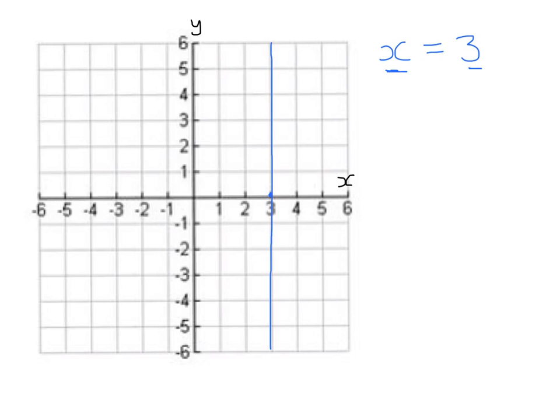We could do another one, say x equals minus 5. And the same, we just find the x-axis, find minus 5, and draw a vertical line down. And you should always use a ruler, of course, not like what I'm doing, it's all wiggly. Yours would be much nicer, I'm sure.